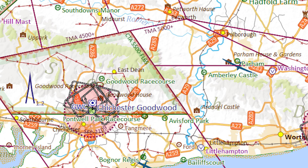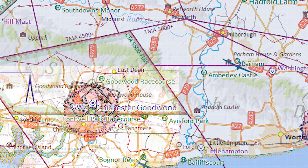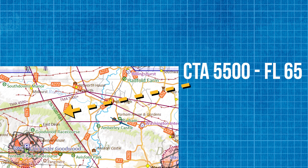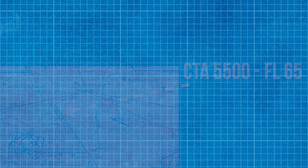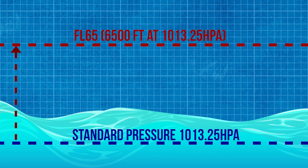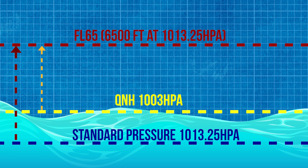If we look at this area of controlled airspace above Chichester Goodwood, we can see that there is a CTA from 5,500 feet all the way up until flight level 65. As mentioned, a flight level is measured off of the pressure setting 1013. This means that the flight level can move up and down depending on the air pressure on the day. If the QNH on a given day is lower than 1013, the flight level will actually drop and become lower. However the opposite will happen if the air pressure increases. So make sure to keep that in mind when planning for a cross-country flight.